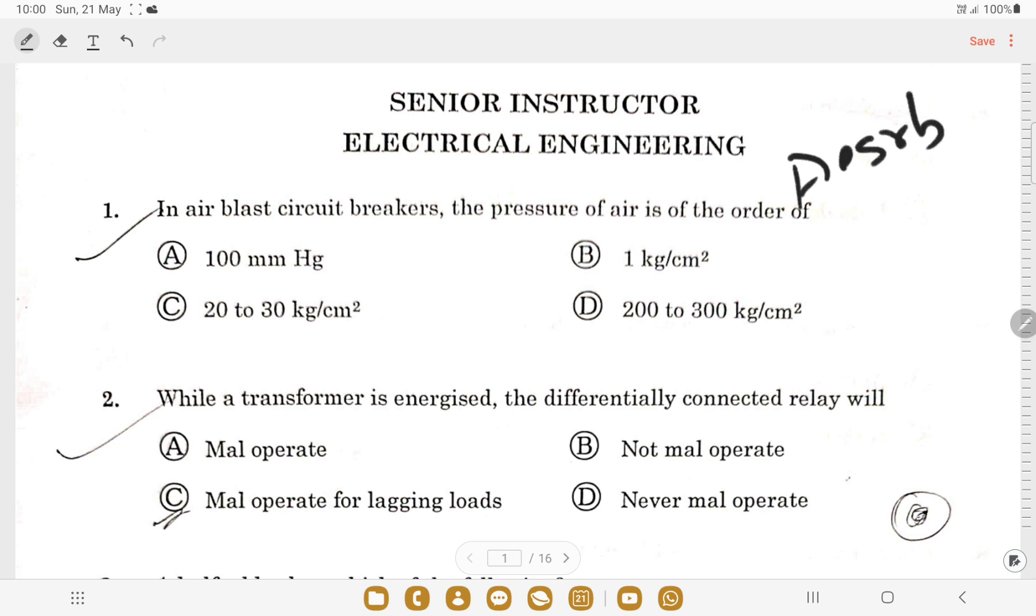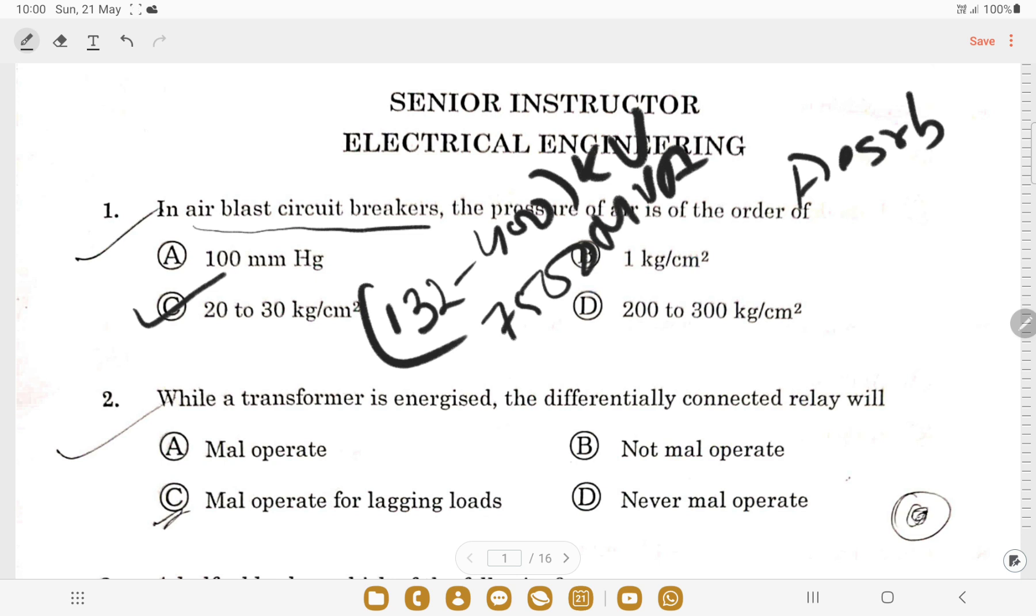The first question here is: in an air blast circuit breaker, the pressure of air is of the order? We know that for air blast circuit breakers it is always around 20 to 30, so option C is the correct answer. Another thing to remember is that this is used for 132 to 400 kV and the breaking capacity of air blast circuit breakers is around 7500 MVA.